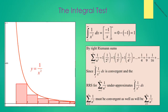Now let's look at the summation from n equals 2 to infinity of 1 over n squared. By a right Riemann sum argument, this is 1 times 1 over 2 squared plus 1 times 1 over 3 squared plus 1 times 1 over 4 squared, which is 1 fourth plus 1 ninth plus 1 sixteenth plus dot dot dot. Since the integral from 2 to infinity of 1 over x squared is convergent, and the right Riemann sum under-approximates the integral, the summation from n equals 2 to infinity of 1 over n squared must be convergent as well, as will be the summation from n equals 1 to infinity of 1 over n squared.